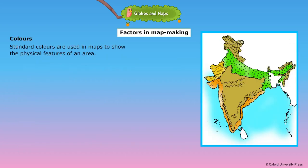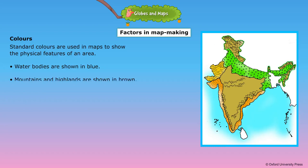Standard colours are used in maps to show the physical features of an area. Water bodies are shown in blue. Deep waters are shown in dark blue and light blue indicates shallow waters. Mountains and highlands are shown in brown.